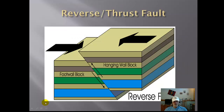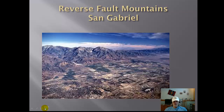The second type of fault is a reverse or thrust fault. These are not as common because you're pushing the hanging wall up and over the foot wall block, and this takes a lot more energy. It's much easier for blocks of crust to slide apart and lengthen than to push one over the top of another. There's a great amount of friction along this zone. When the hanging wall is pushed over the foot wall, you're talking about a reverse fault. An example of these are the San Gabriel Mountains out in California.